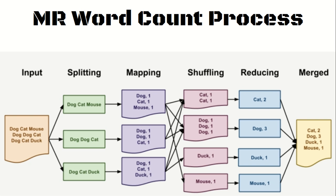Here's the popular word count example. The input string contains words like 'dog', 'cat', 'mouse'. First, the data is split using a delimiter. In the mapping phase, the logic generates key-value pairs: 'dog,1', 'cat,1', 'mouse,1'. In the shuffling phase, similar keys are grouped together. Finally, in the reducer phase, the final addition and aggregation takes place, and the results are merged back.